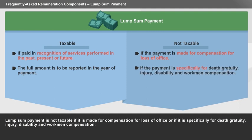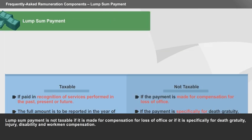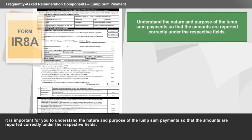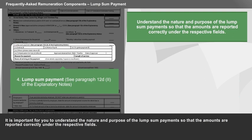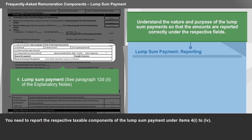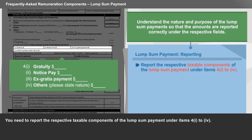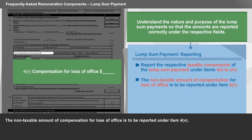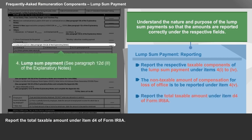Lump sum payment is also not taxable if it is specifically for death gratuity, injury, disability, and workman compensation. It is important to understand the nature and purpose of the lump sum payments so that the amounts are reported correctly under the respective fields. Report the respective taxable components under Items 4, Parts 1 to 4. The non-taxable amount of compensation for loss of office is to be reported under Item 4, Part 5. Report the total taxable amount under Item D-4 of Form IR-8A.